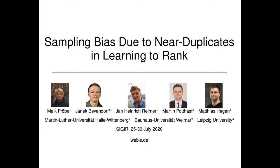Welcome to the presentation for the short SIGIR paper on sampling bias due to near-duplicates in learning to rank. This paper is joint work by Mike Fröbe, Janek Bewendorf, Jan Heinrich Reimer, Martin Potthast, and Matthias Hagen.